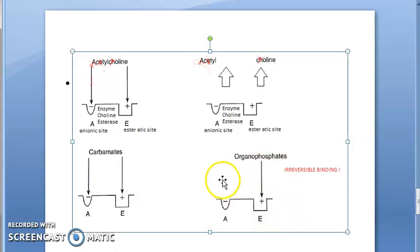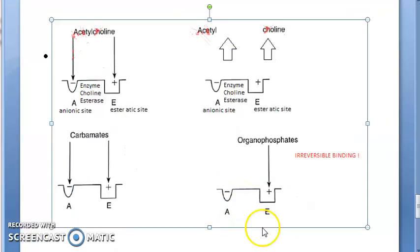How does pralidoxime actually work? Pralidoxime actually has a positive charge, so it comes and binds here to the anionic side.